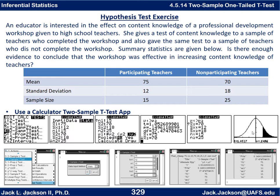If you press Draw instead of Calculate, you get a picture of the t-distribution with roughly 37.47 degrees of freedom. The boundary of the shaded region is our t-test statistic of about 1.05. It's a right-tailed test, so only the area to the right of that value is shaded. That shaded area — since it's a one-tailed test — is the p-value. If this had been a two-tailed test, we would have gotten this same area but doubled it to get p.